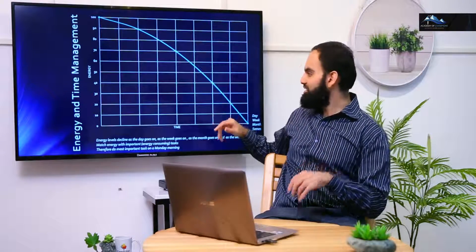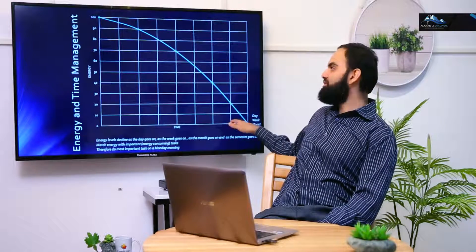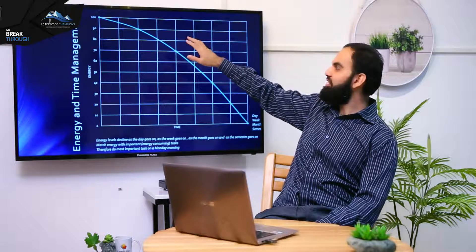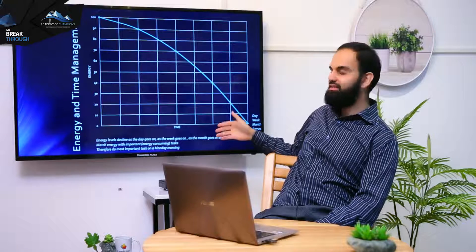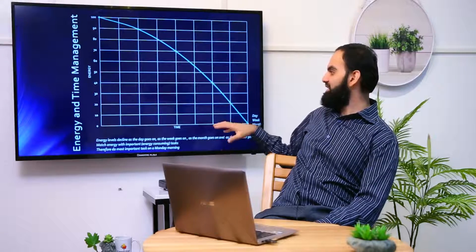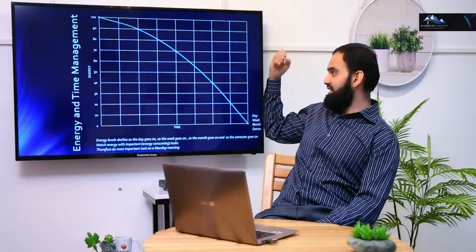An example of this is, as the day goes on, as the week goes on, as the month goes on, or as the semester went on, you would start off at 100 and then it would decline to zero by the end. Energy levels decline as the day, week, month, and semester go on. And the key thing was this.